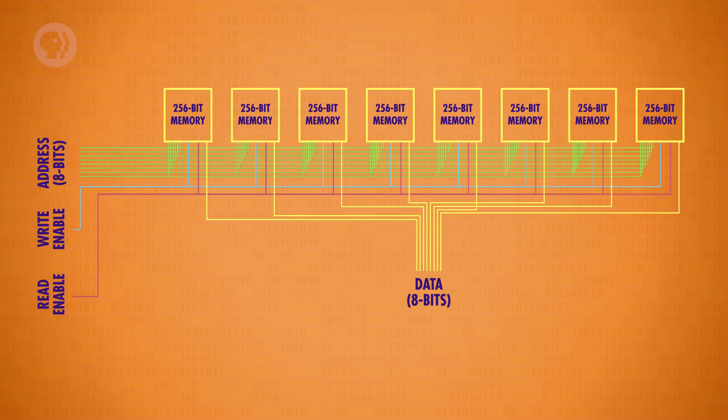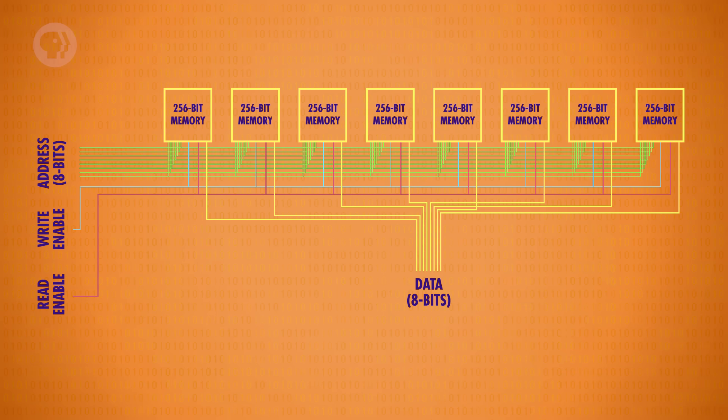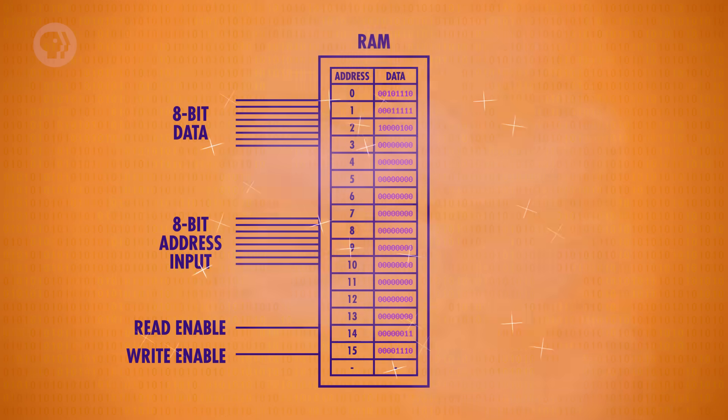Again, to keep things simple, we want to leave behind this inner complexity. Instead of thinking of this as a series of individual memory modules and circuits, we'll think of it as a uniform bank of addressable memory. We have 256 addresses, and at each address, we can read or write an 8-bit value. We're going to use this memory component next episode, when we build our CPU.